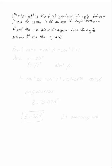The magnitude of f is 103 kilonewtons in the first quadrant. The angle between f and the positive x-axis is 20 degrees, so alpha is 20 degrees. The angle between f and the positive z-axis is 77 degrees, that's gamma, which is 77 degrees.